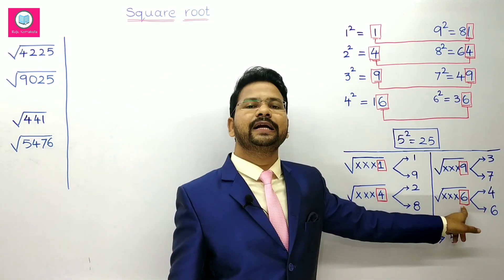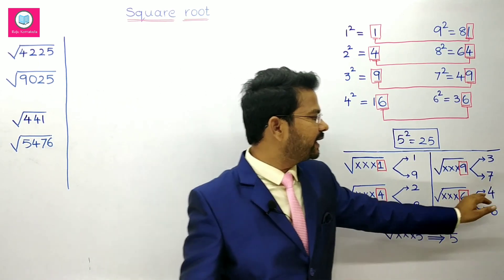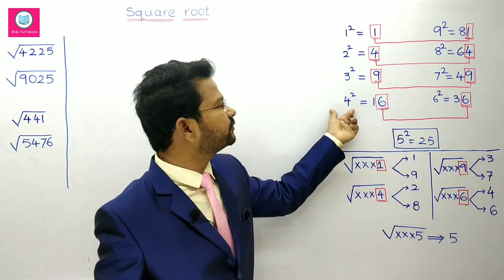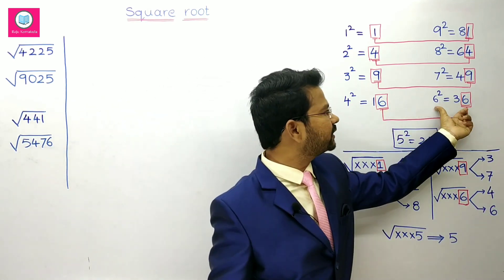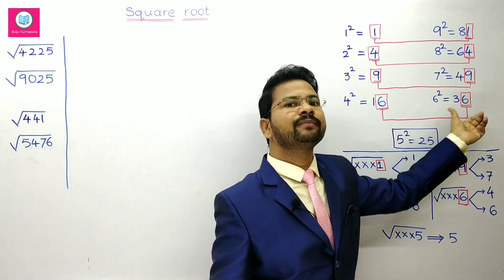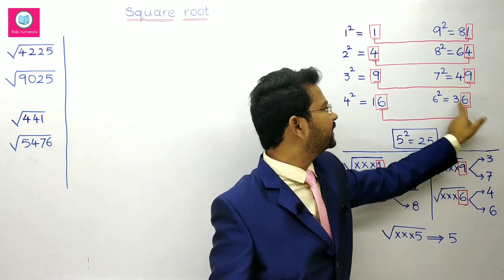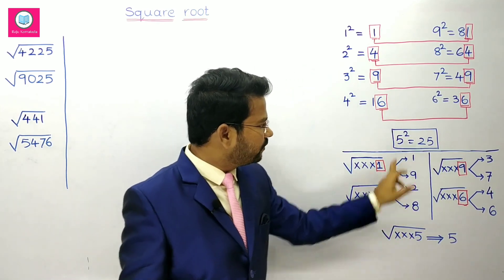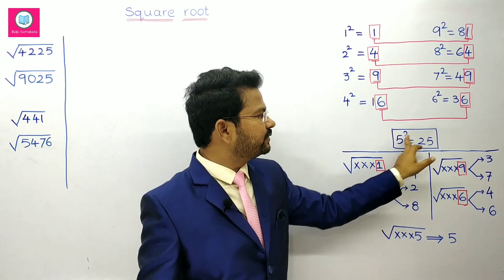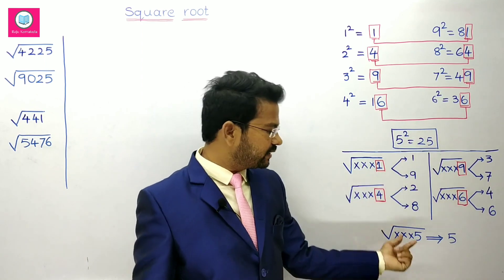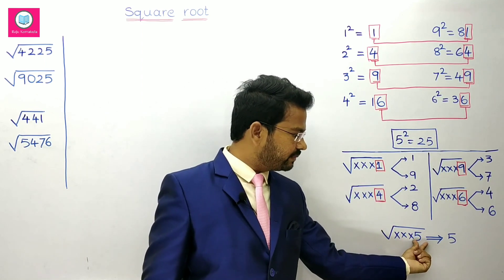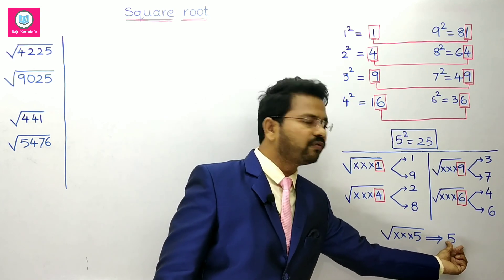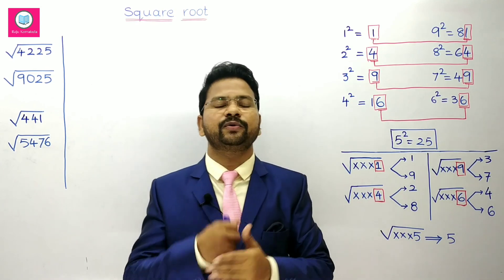If a number ends with 6, it may be either 4 squared or 6 squared. 4 squared is 16 and 6 squared is 36, but the units place is 6. Now, 5 squared is 25, so whenever a square number ends with 5, it will compulsorily have 5 in the units place only.